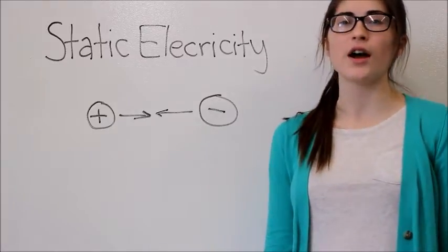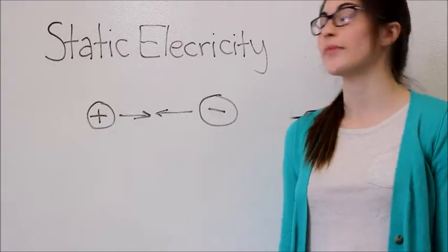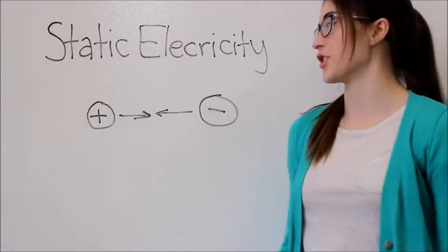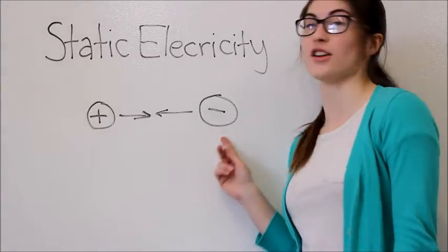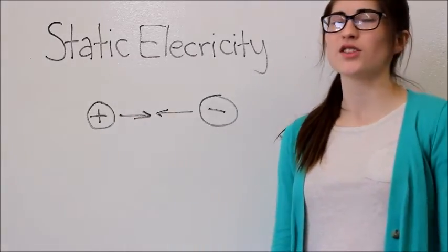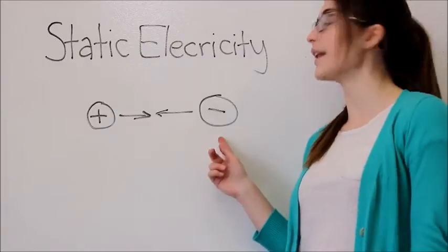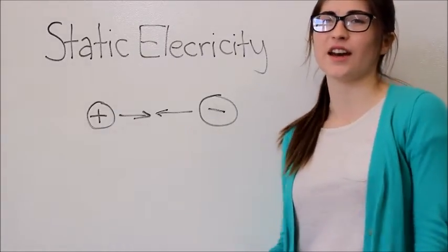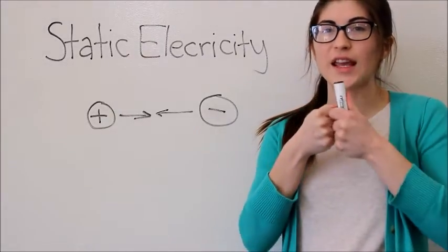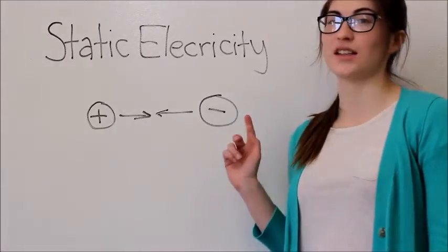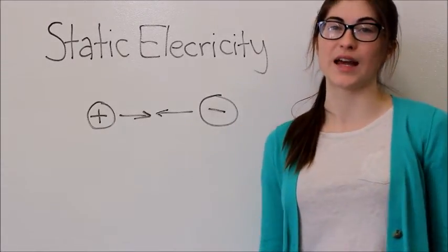Here we have an example of charges that attract. These charges are unlike charges. Here we have a proton and here we have an electron. So those charges have a positive and negative charge. Since they are unlike, they are drawn together. This is an important idea for static electricity.